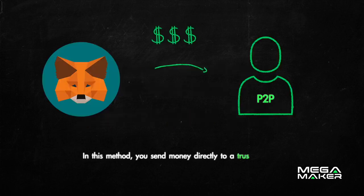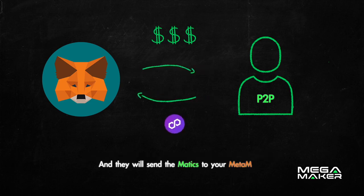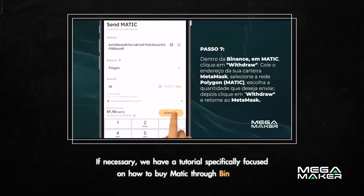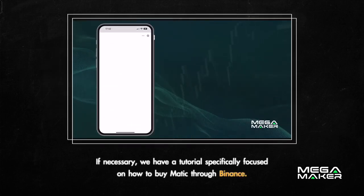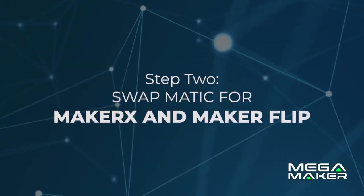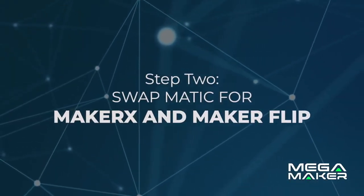In the P2P method, you send money directly to a trusted seller and they will send the MATIC to your MetaMask. If necessary, we have a tutorial specifically focused on how to buy MATIC through Binance. Step 2: swap MATIC for Maker X and Maker Flip.